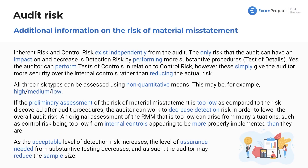The risk of material misstatement — inherent risk and control risk — exist independently from the audit, meaning you're not going to affect them; you're just going to uncover what the real risk is. The only risk that the auditor can have an impact on and decrease is detection risk, by performing more substantive procedures, also known as tests of details.